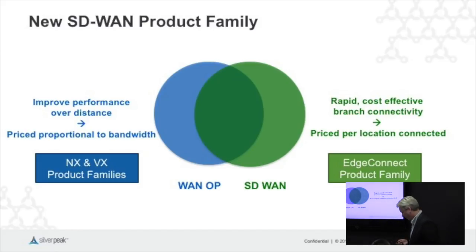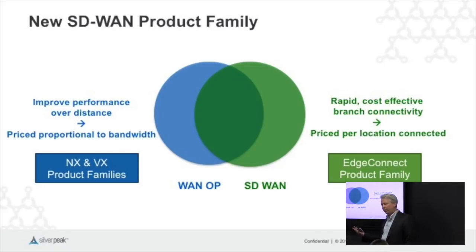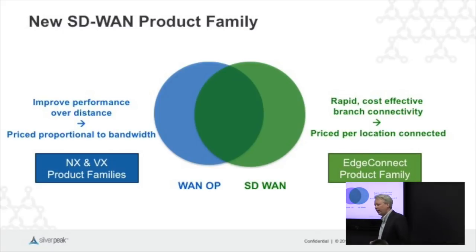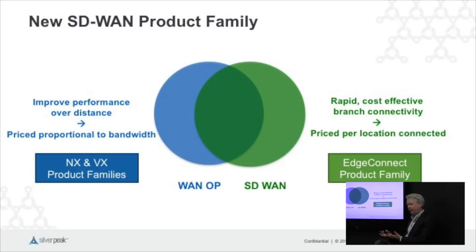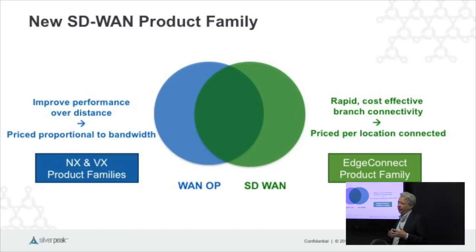With our current products, our NX and VX families, these are WANOP products with an SD-WAN flavor. What Edge Connect, our new product family, is all about is it starts with a base pure SD-WAN set of functionality, priced in a flat way — price per site. And then to that, you can layer on additional services and add flavors of WANOP if you like.